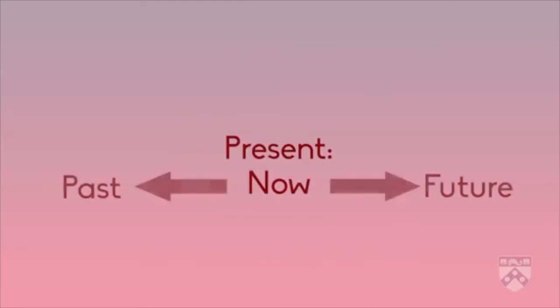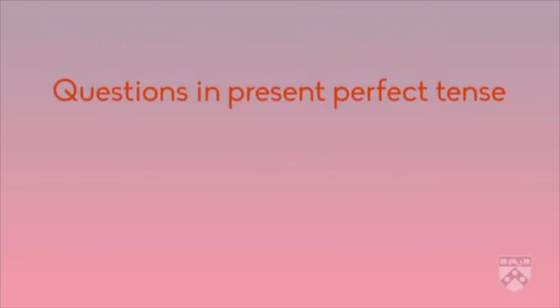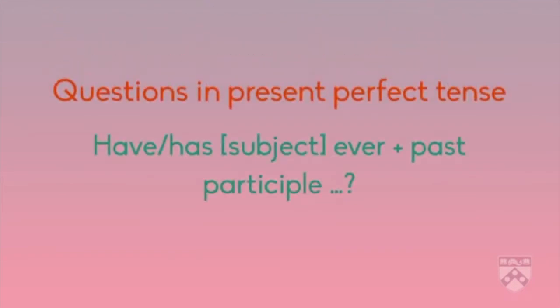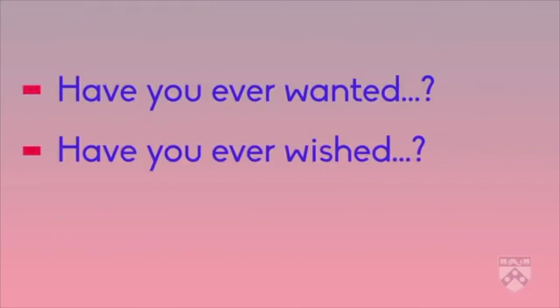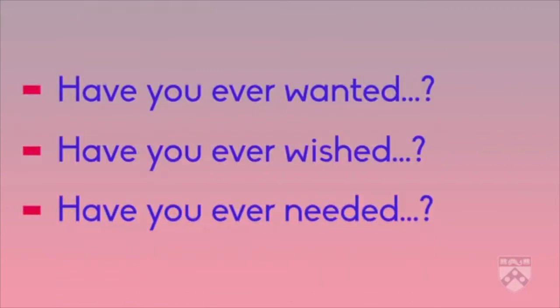Let's review some grammar rules for forming 'have you ever' questions. These questions use the present perfect tense because they ask about someone's experience up to or before now. The phrase 'have you ever' should be followed by a past participle. We form the past participle for regular verbs by adding 'ed' to the end. Here are some other examples: 'Have you ever wanted?', 'Have you ever wished?', and 'Have you ever needed?'